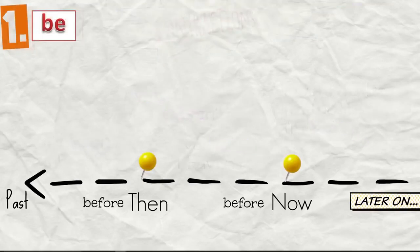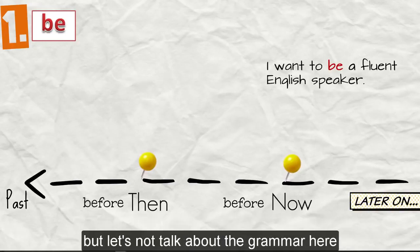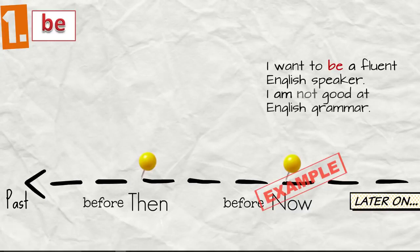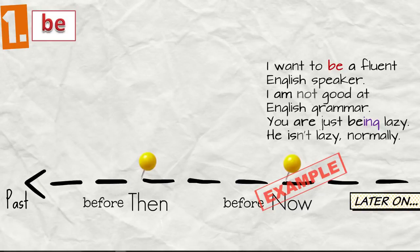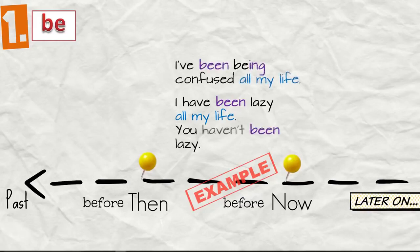I want to be a fluent English speaker. So the verb to be, it's the basic form or we also say infinitive. But let's not talk about the grammar here. Alright. I am not good at English grammar. You are just being lazy. He isn't lazy normally. Alright. Then we have. I have been lazy all my life. You haven't been lazy. I've been being confused all my life.